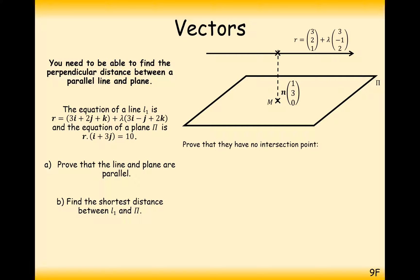To prove that they have no intersection points, let's try and find an intersection point by substituting the equation of the line into the equation of the plane. That's how we find intersection points between lines and planes. So substituting the whole vector of the line dotted with the normal vector equals 10, then expand out your dot product and we see that this 3 lambda here and this minus 3 lambda here cancels each other out.